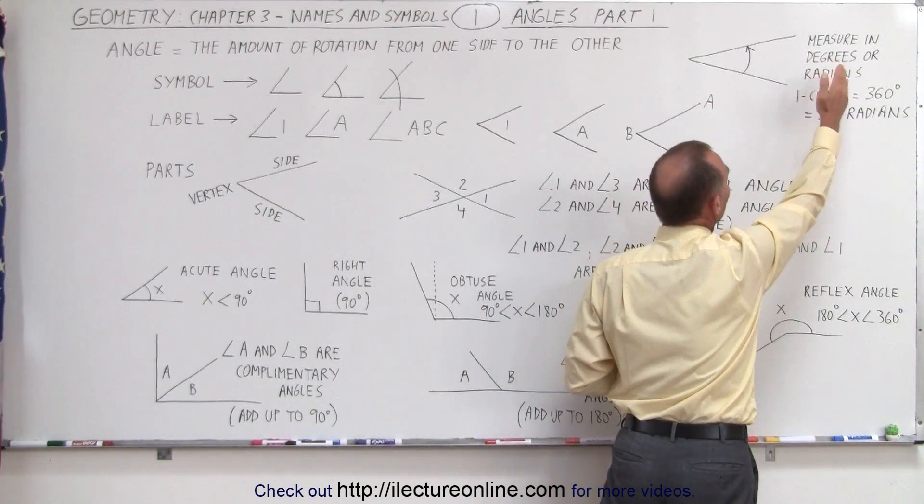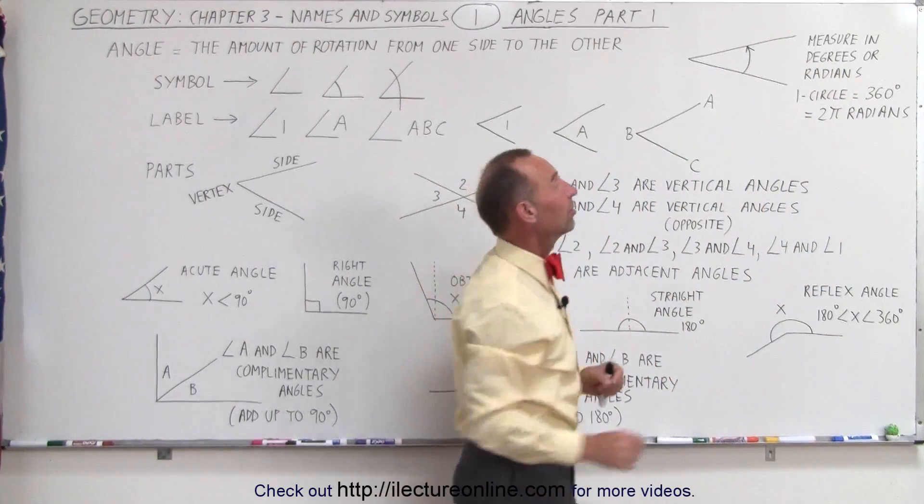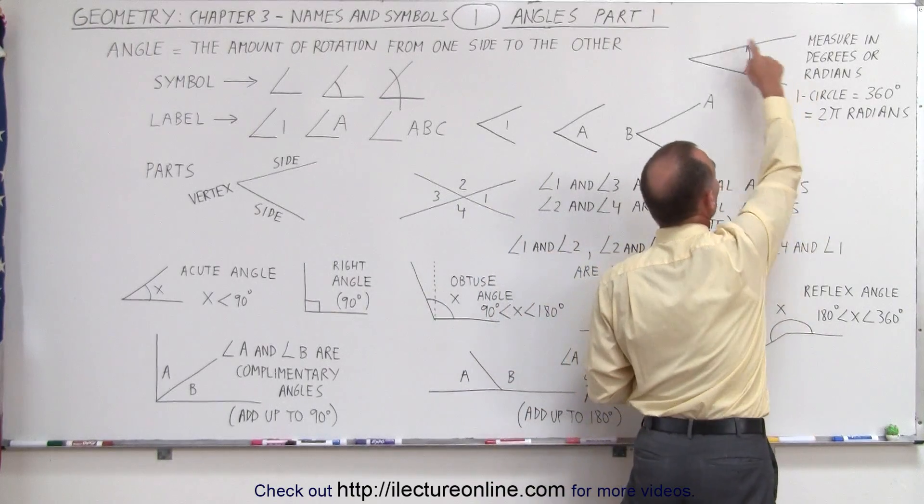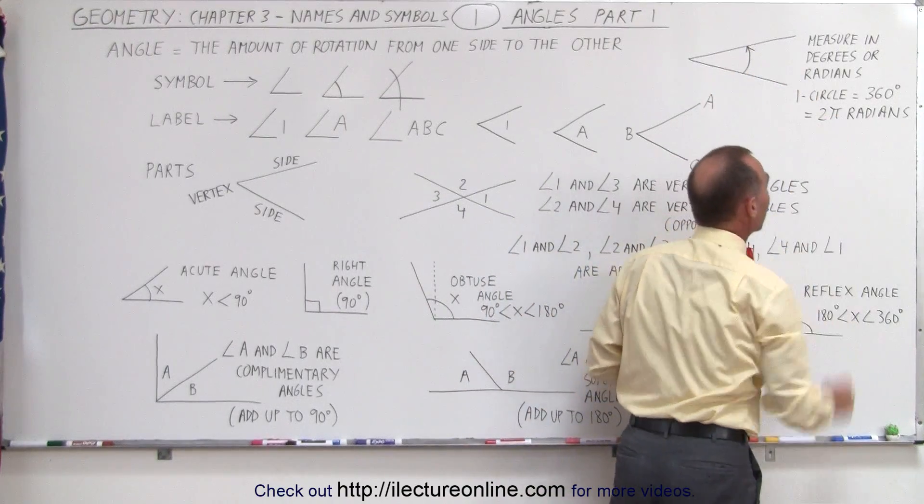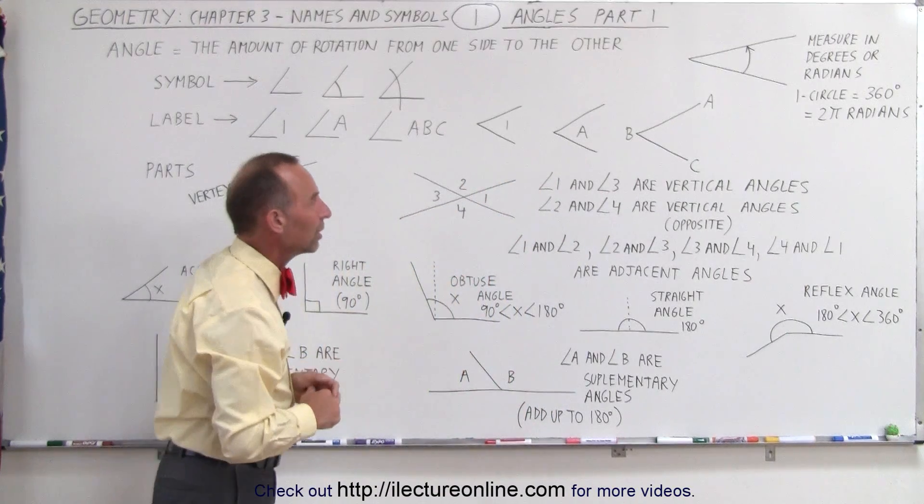It's typically measured in degrees or radians, and if we go around a complete circle, that is equal to 360 degrees, or if we go around a complete circle, it's also expressed in terms of radians, two pi radians. Two pi radians equals 360 degrees.